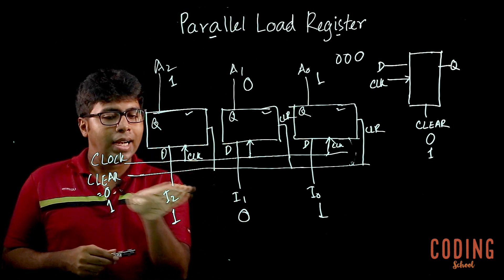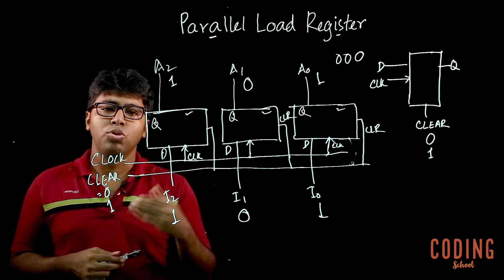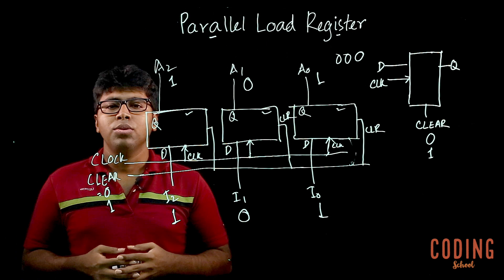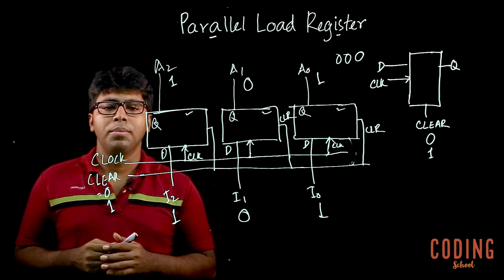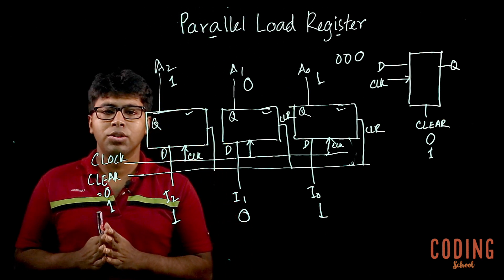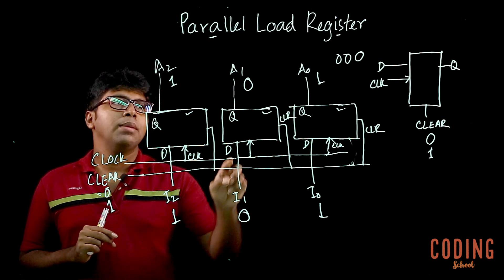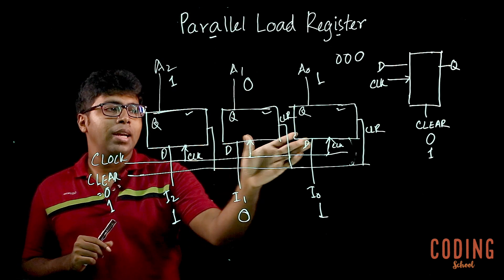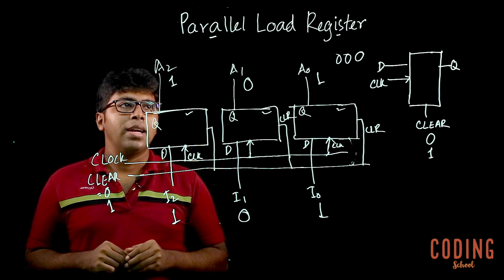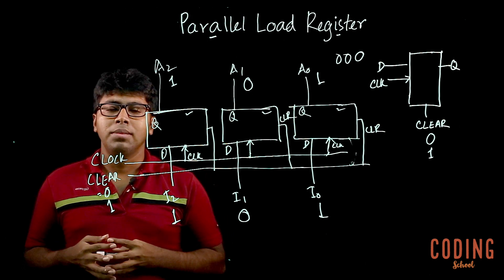We will save data from the 4-bit register. We need to load the data and the parallel load register. We need to save the binary bit cache, load the clock and use the D flip-flop with the parallel load register. So, we will see you in the next video.